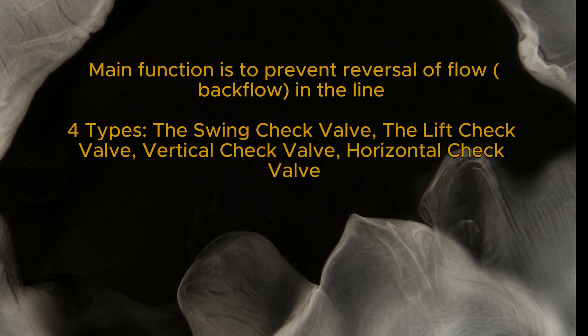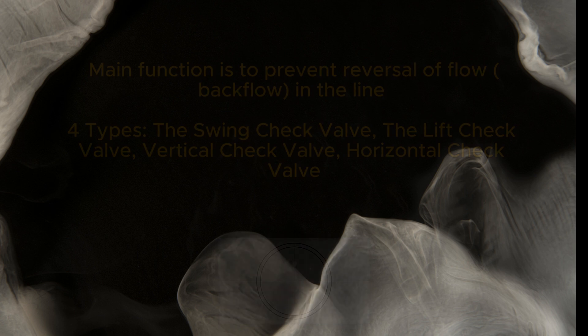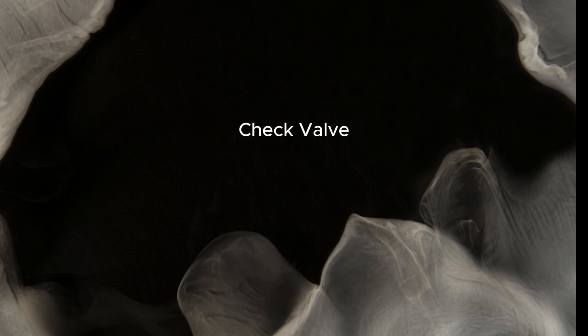The check valve's main function is to prevent reversal of flow, or backflow, in the line. Four types: the swing check valve, the lift check valve, the vertical check valve, and the horizontal check valve.